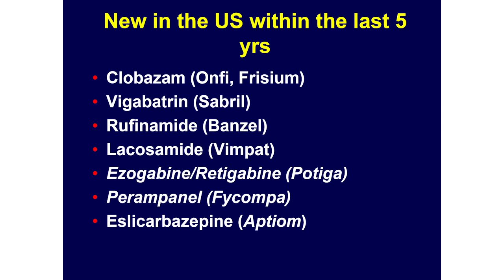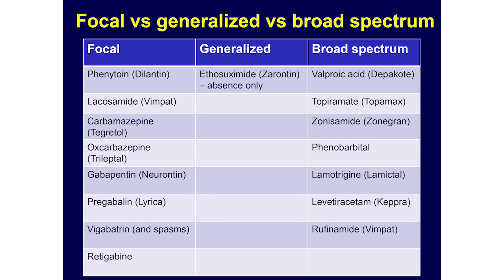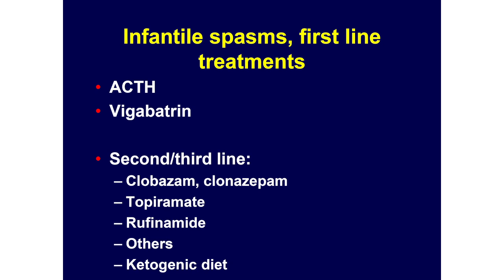These are the medications newer in the past five years or so in the United States, and we're using most of them pretty frequently. Like we talked about before, there are medications better for focal seizures — sometimes those can actually worsen generalized seizures. In Rett syndrome and CDKL5, we often pick broad-spectrum medications that work for a variety of different seizure types, both focal and generalized. For infantile spasms specifically, ACTH — which is a steroid — and vigabatrin are top medication choices, with second and third-line options and non-medication options as well.